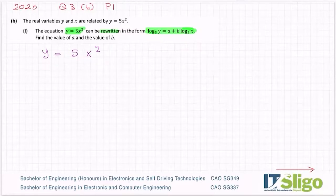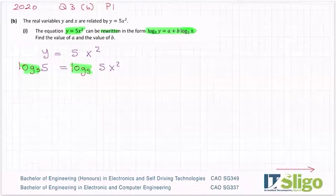What did they do to Y to make it log to the base 5 of Y? Well, they took log to the base 5 of it. So let's do that. Let me go log to the base 5 of Y equals, of course what I do to one side I have to do to the other, 5X squared. In maths you can do anything you want to an equation as long as you do it to the whole equation. I haven't changed that equation in any way, I'm just in the process of rewriting it in a different form.